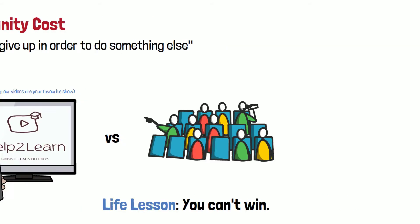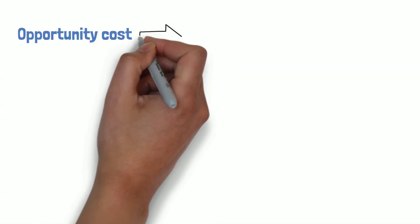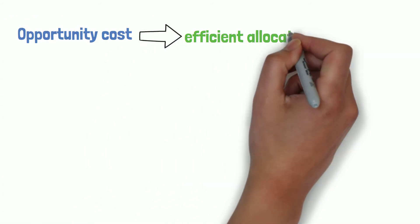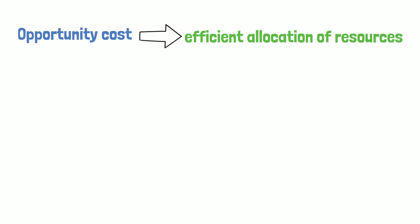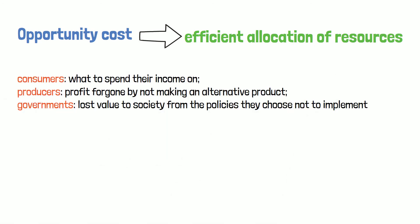Opportunity cost is a key concept in economics which is used to ensure a more efficient allocation of resources. For example, consumers use the concept to choose what to spend their income on. Producers use it to look at the profit foregone by not making an alternative product. And governments use it to look at the lost value to society from the policies they choose not to implement.